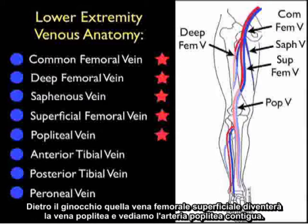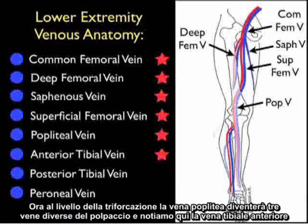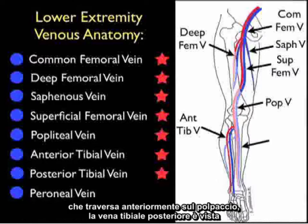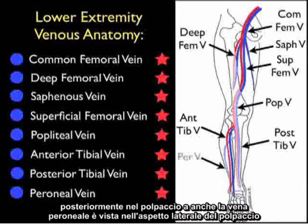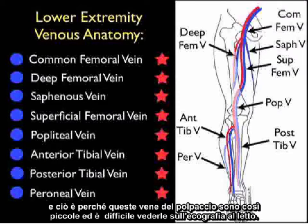Behind the knee, that superficial femoral vein will become the popliteal vein, seen with the adjacent popliteal artery. At the level of trifurcation, the popliteal vein will become three different calf veins: the anterior tibial vein coursing anteriorly onto the calf, the posterior tibial vein seen posteriorly in the calf, and the peroneal vein seen to the lateral aspect of the calf. These calf veins are so small that it's difficult to see them on bedside ultrasonography.